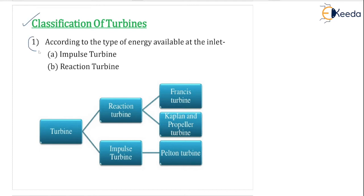There are many parameters by which we can classify turbines. The first classification is according to the type of energy available at the inlet. Based on this, we have the impulse turbine and the reaction turbine. We are going to define what impulse and reaction turbines are in detail.